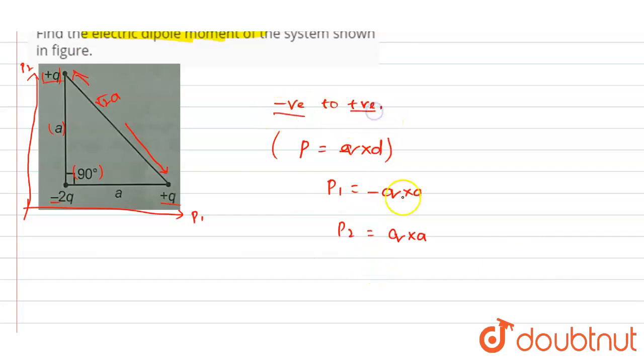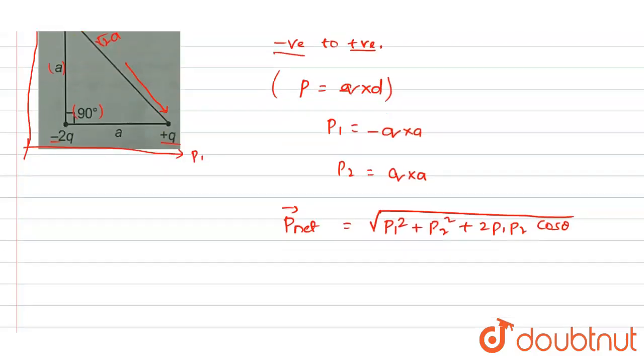So net P_net value, or P_net vector, will be equals to √(p1² + p2² + 2p1p2cosθ). We can simplify this equation.